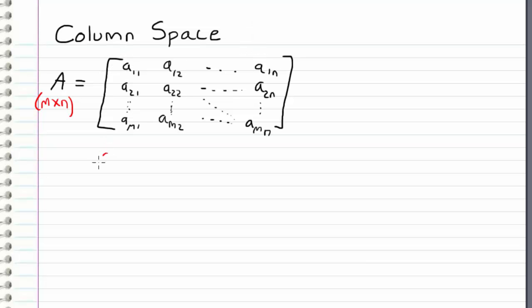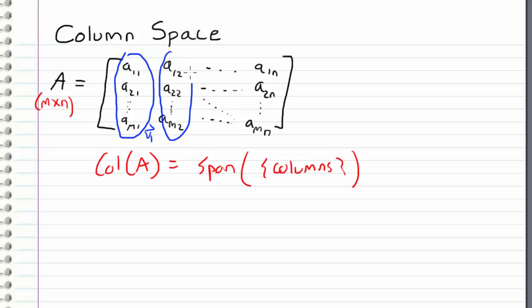And we simply take the column space of this matrix A as the span of the columns. So literally, we just take the columns of our matrix. We'll call this V1, we'll call this V2, and we continue taking the columns all the way down to the last column, which we will call Vn.